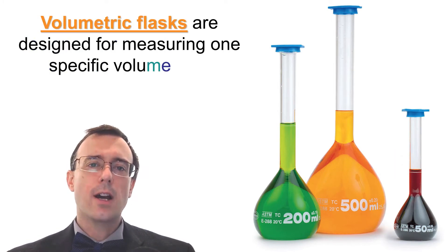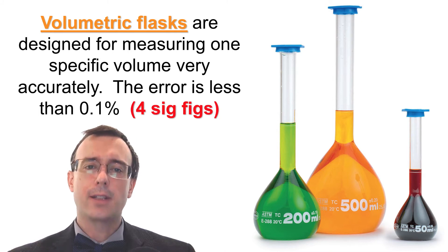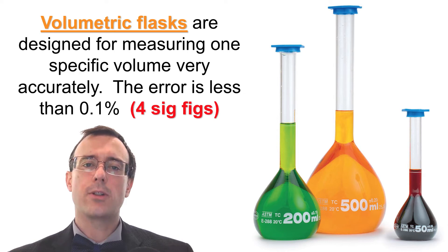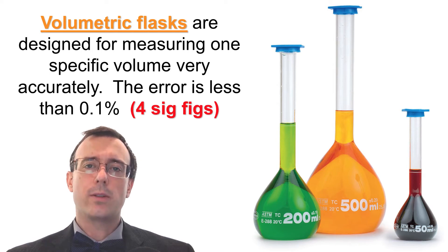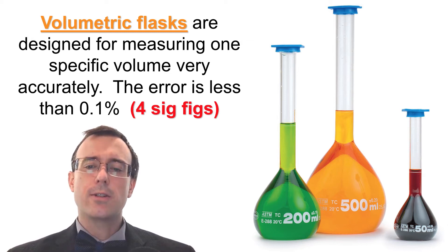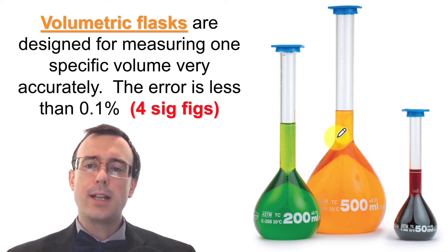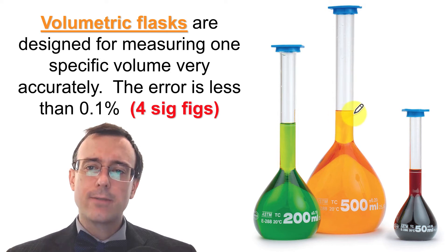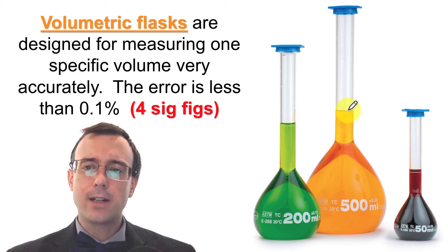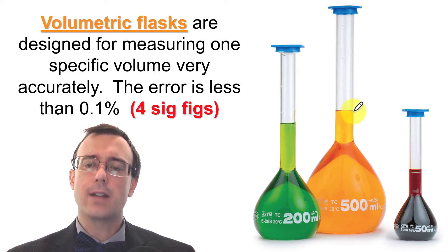Volumetric flasks are designed for measuring one specific volume very accurately. Typically the error is less than 0.1%, meaning your volume measurement should have about four significant figures. They're very good if you have an exact volume to measure, but you can't get a range of different volumes like with graduated cylinders. They are so accurate because the large bulb holds most of the volume, but their narrow neck means a small change in volume makes a big difference — calibrated very accurately to that one specific volume.